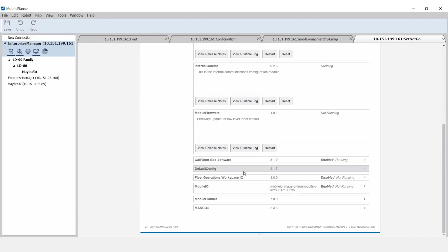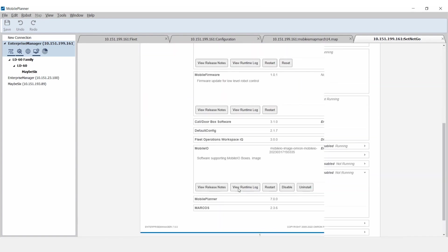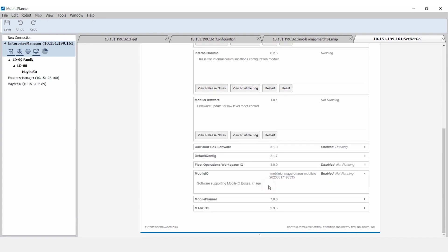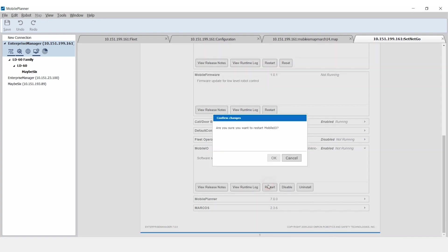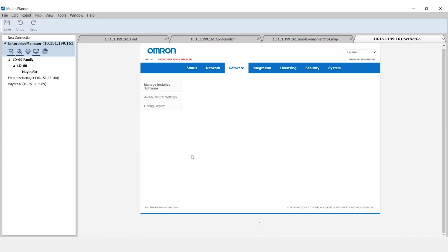Check that the Mobile I.O. package is enabled and running. It can be enabled and restarted as shown. When the Mobile I.O. application is running in SetNet Go, it will be ready to connect to the Mobile I.O. Box.